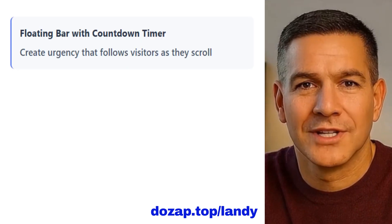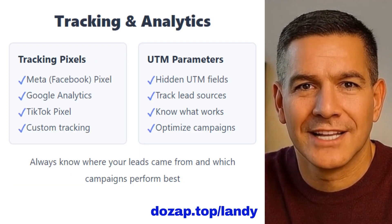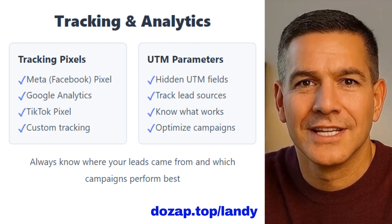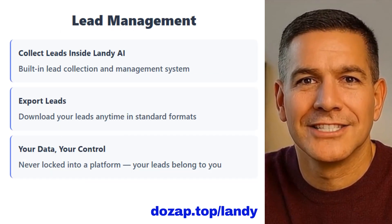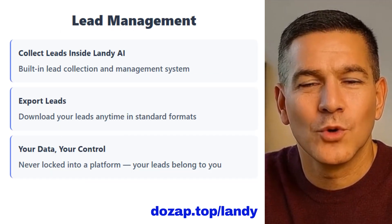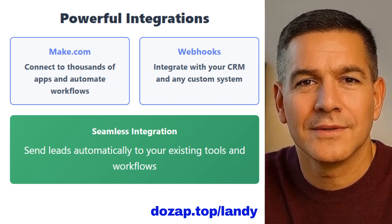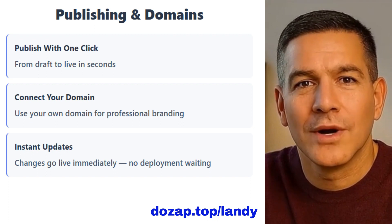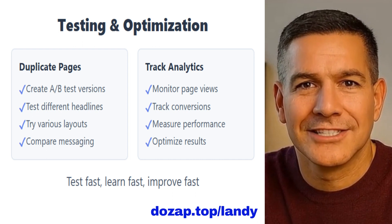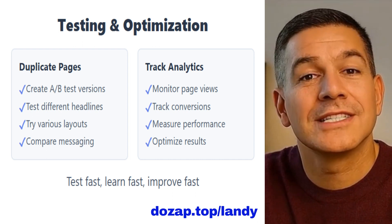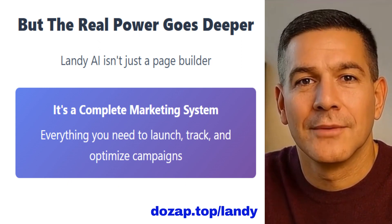But the real power goes deeper. You can add a floating bar with a countdown timer. You can embed videos. You can add tracking pixels from Meta, Google, TikTok. You can insert hidden UTM fields so you always know where leads came from. You can collect leads inside Landy AI or export them. You can connect to Make.com, integrate with your CRM through webhooks, publish your page with one click, connect your domain, duplicate pages for A/B tests, and track analytics and conversions. This turns Landy AI into a full marketing execution system, not just a page builder.